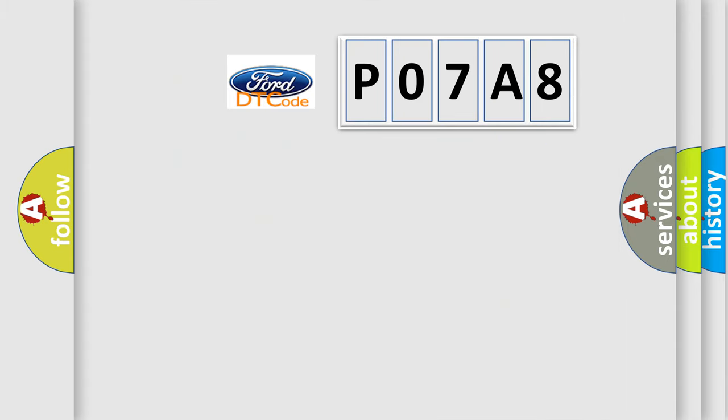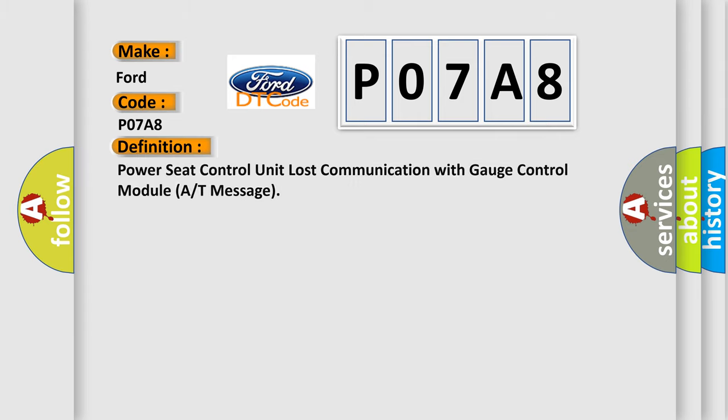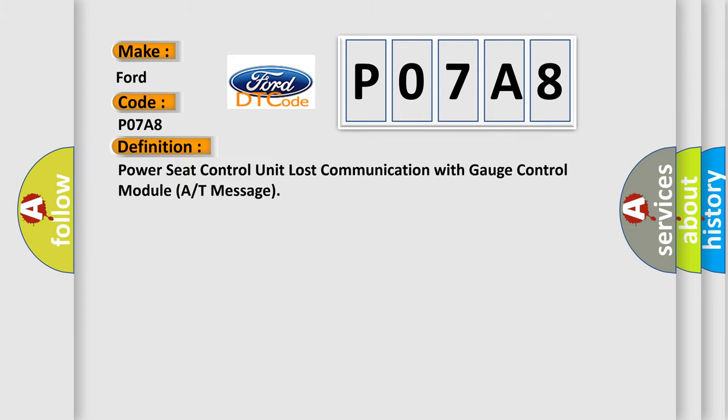The number itself does not make sense to us if we cannot assign information about it to what it actually expresses. So, what does the diagnostic trouble code P07A8 interpret specifically for Infiniti car manufacturers? The basic definition is: Power seat control unit lost communication with gauge control module A or T message. And now this is a short description of this DTC code.